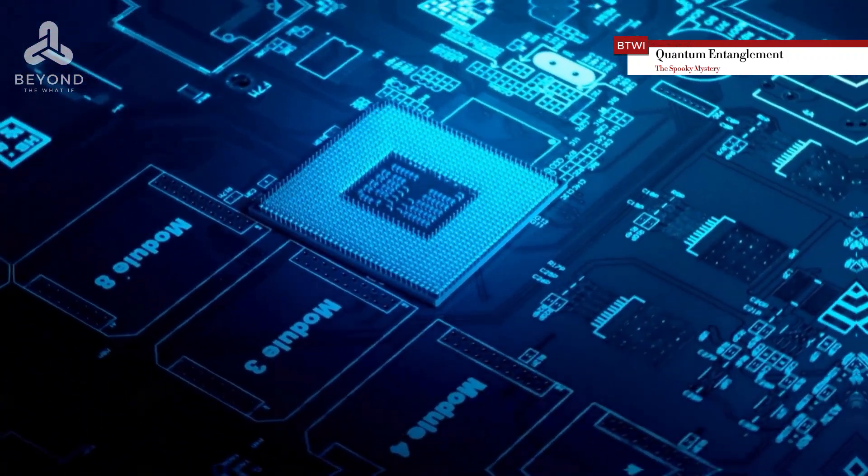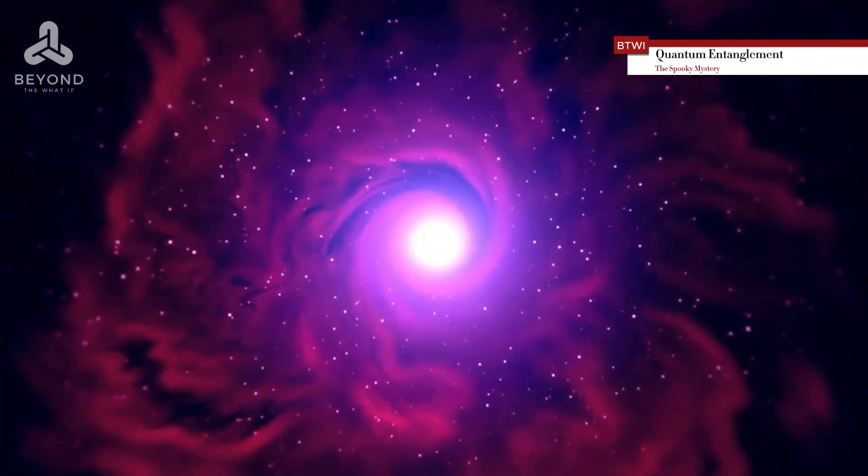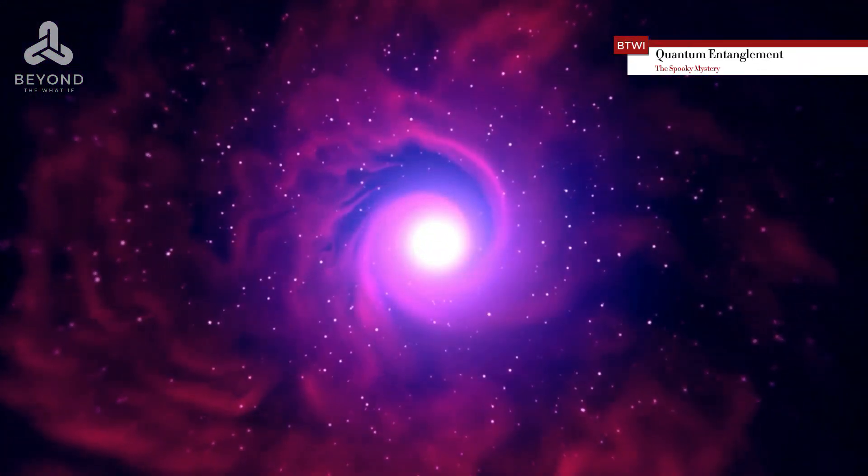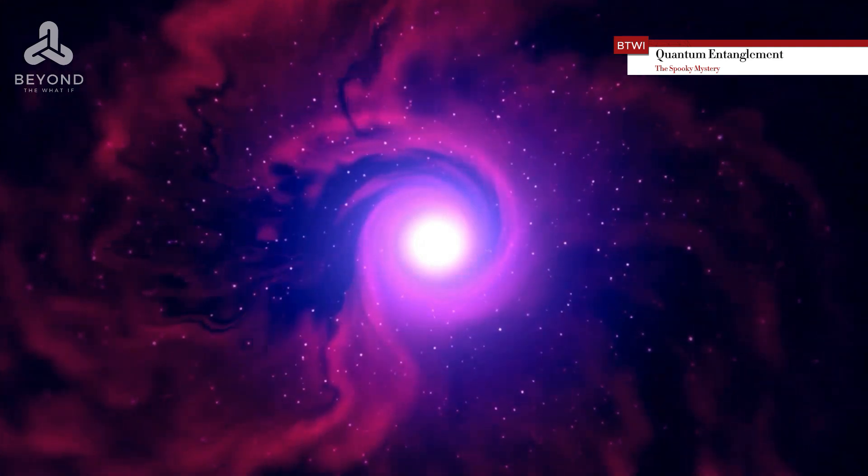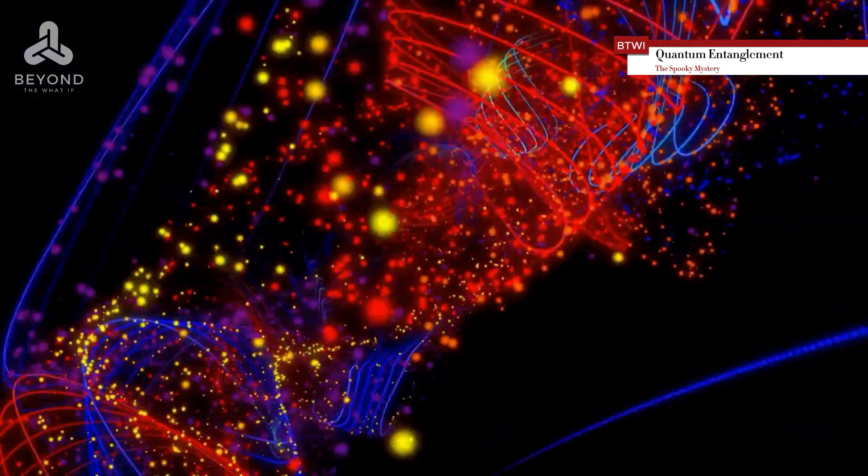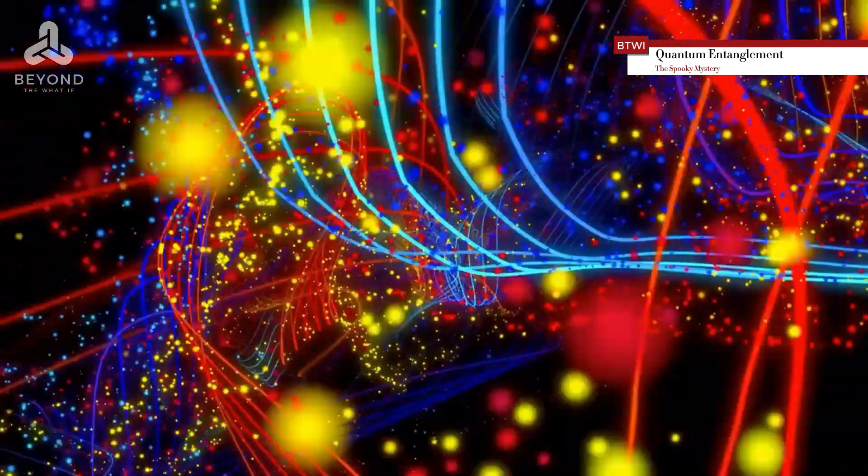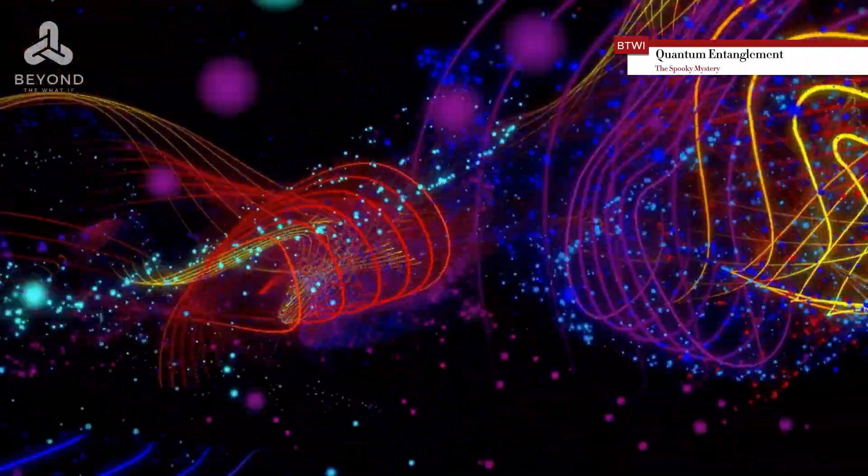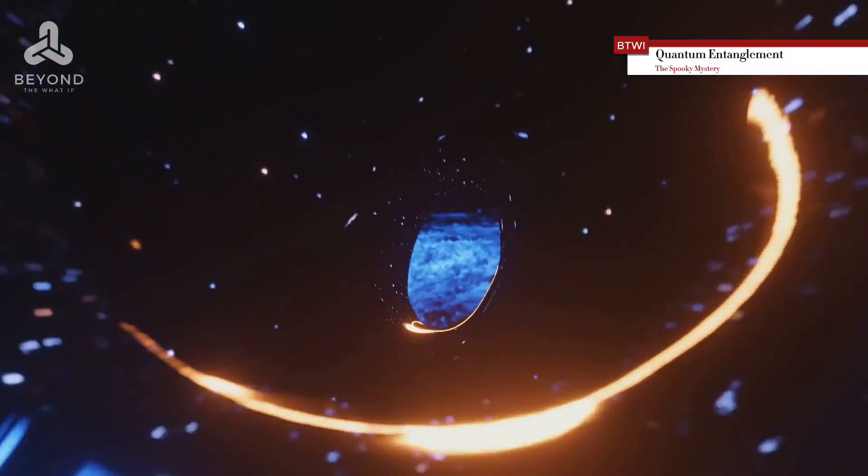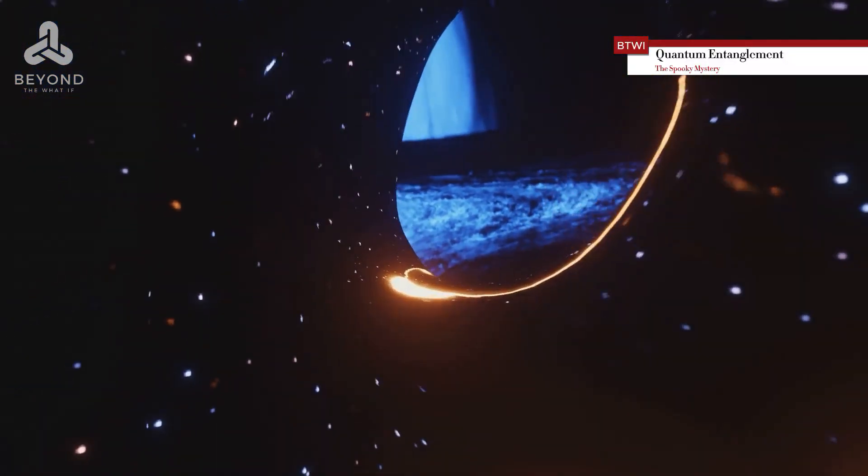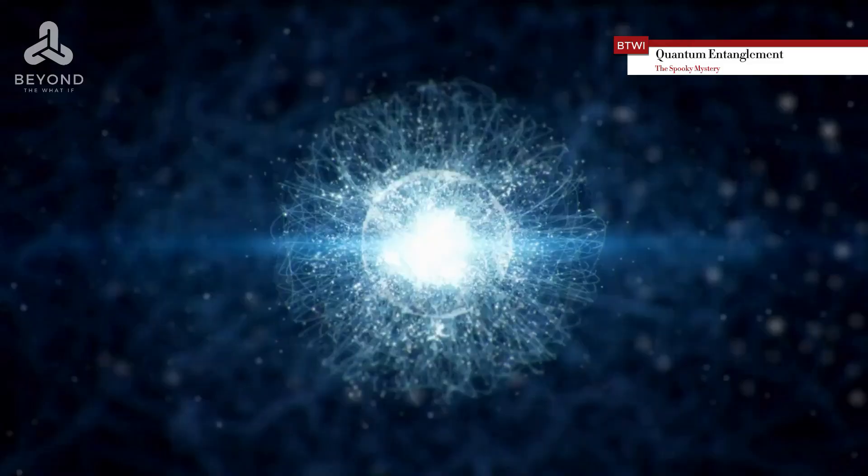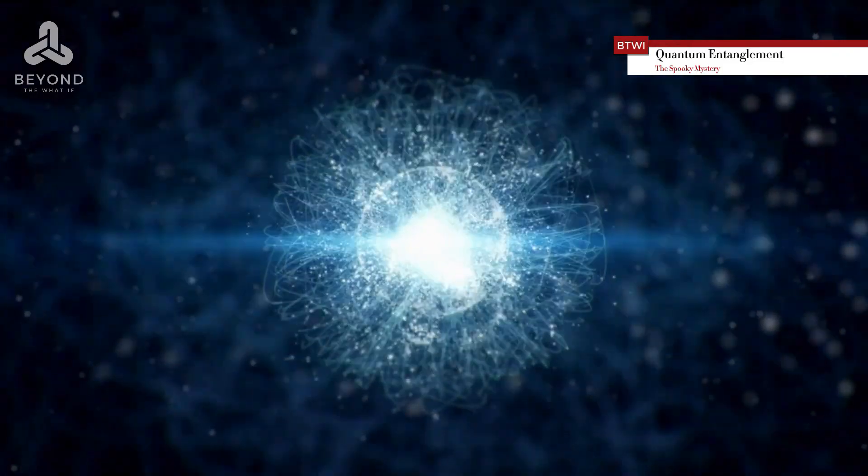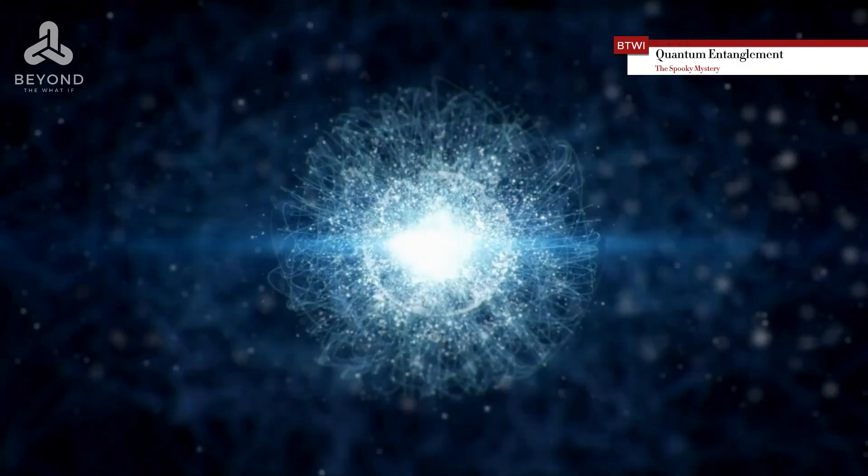The bizarre nature of entanglement has led to numerous interpretations of quantum mechanics, each attempting to explain how the universe can be so strange. One of the most well-known is the many worlds interpretation. It suggests that every time a quantum measurement is made, the universe splits into multiple parallel universes, each representing a different outcome. In this view, entanglement is about particles existing in multiple states across these parallel universes.